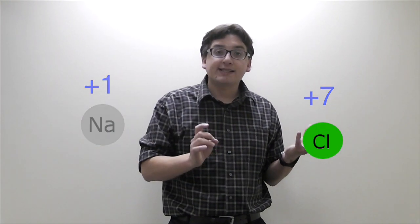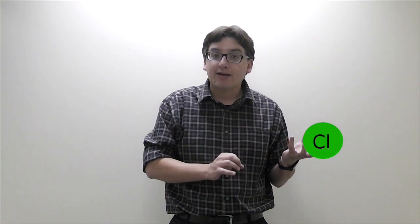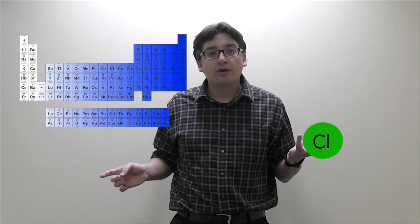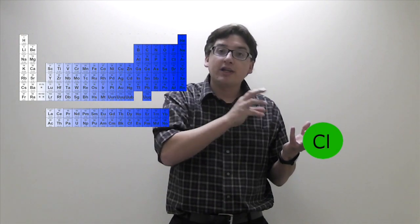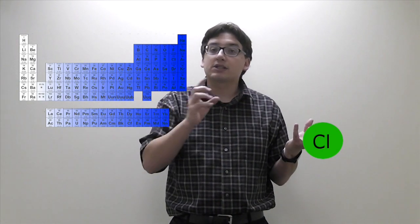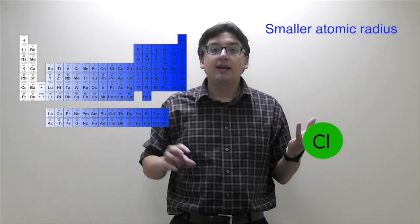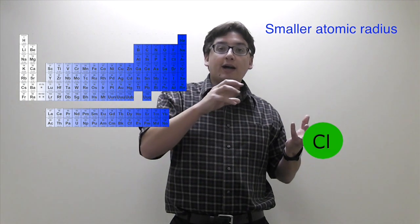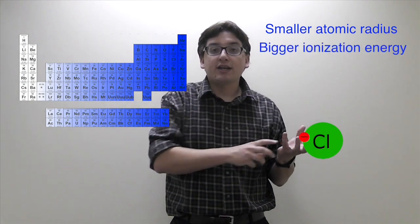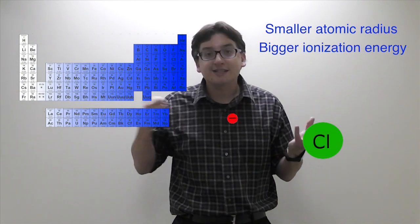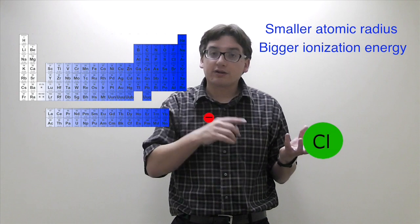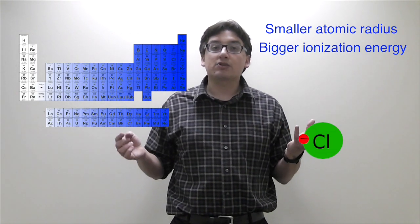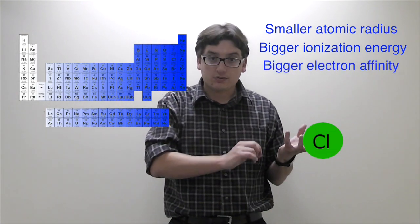So that means that the more valence electrons you have, the further to the right you go on the periodic table, the stronger the forces are pulling these electrons in, which means you have a smaller atomic radius. And it means you have a bigger ionization energy because it's more difficult to pull off these electrons. And it means it's easier to add electrons to it—that means there's a stronger electron affinity as well.